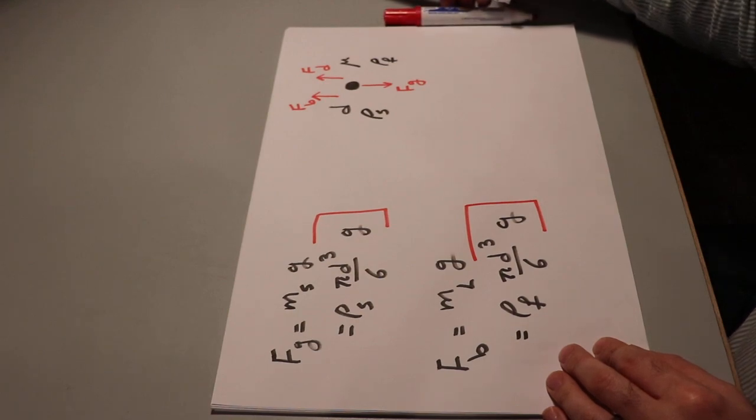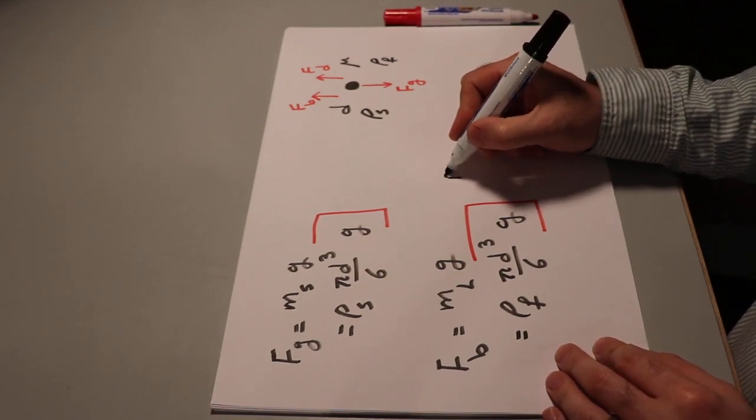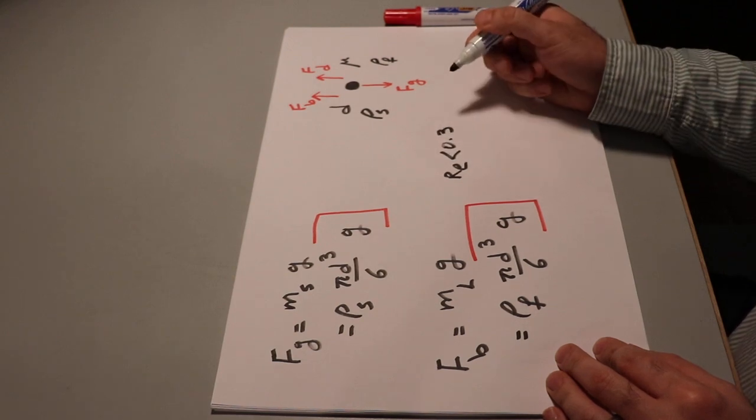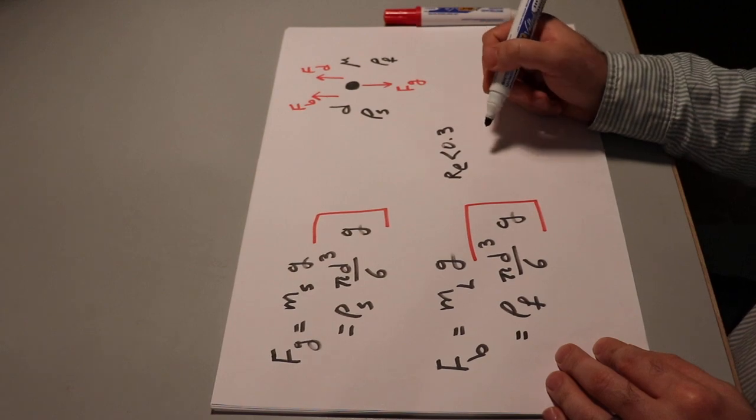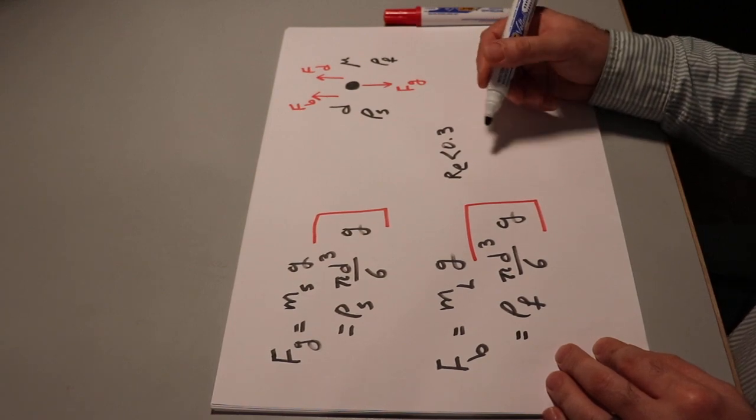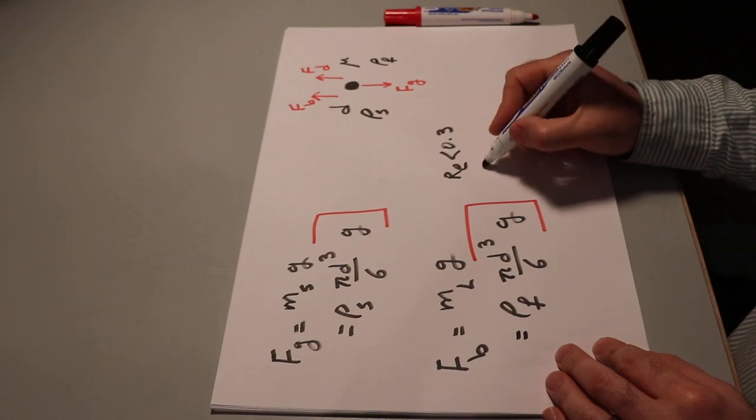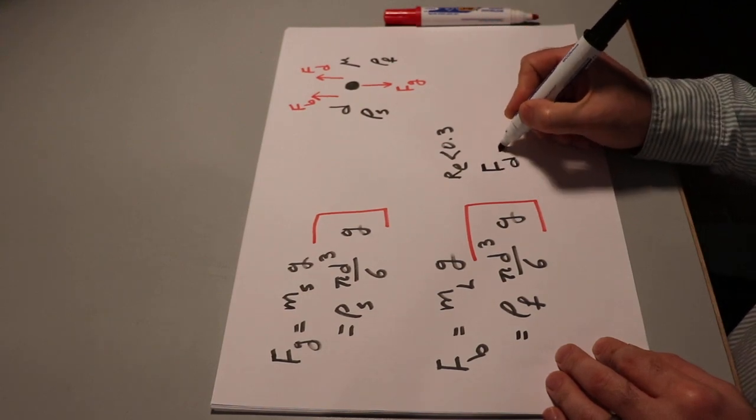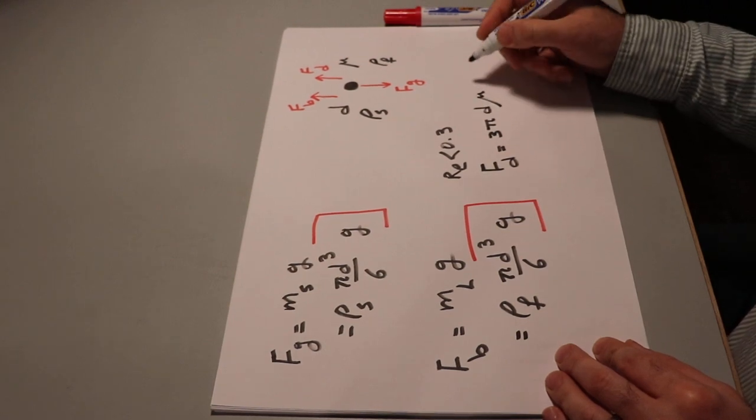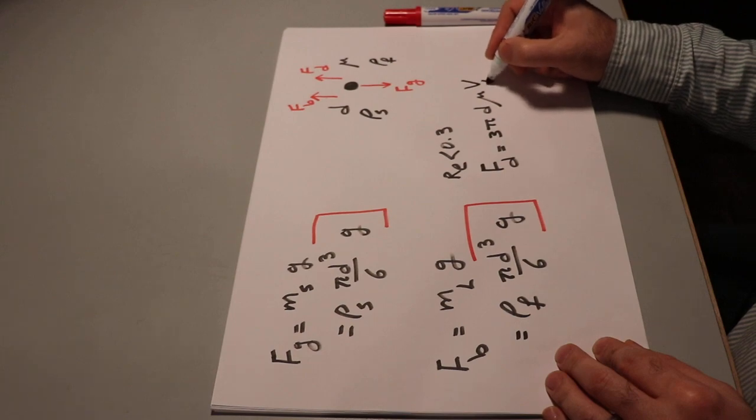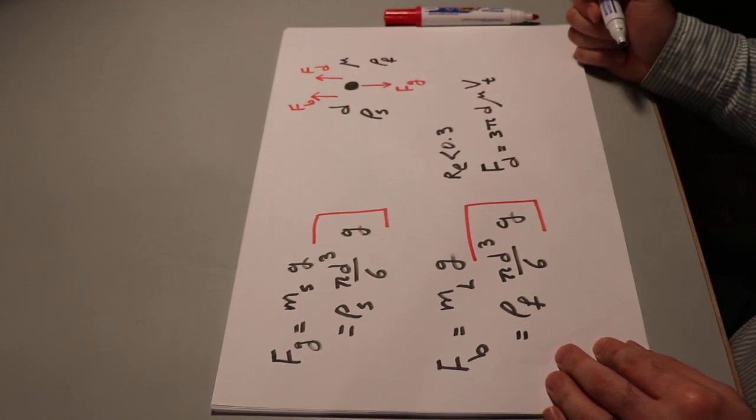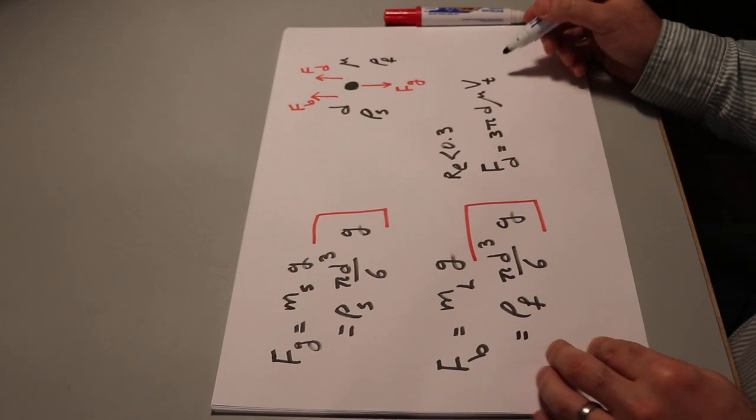As for the drag forces, when the Reynolds number is less than 0.3, the drag force can be calculated based on the Stokes law. That is, Fd is equal to 3 pi d mu times Vt. And Vt is the terminal velocity of this settling particle. So that's the Stokes law.